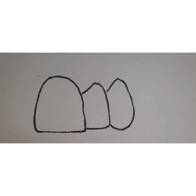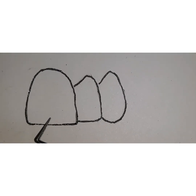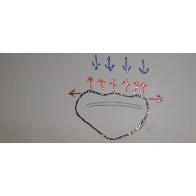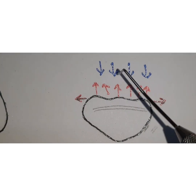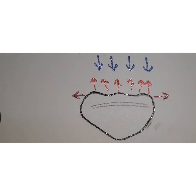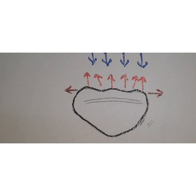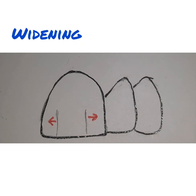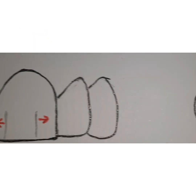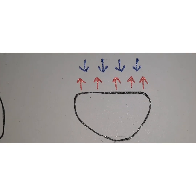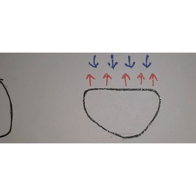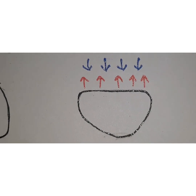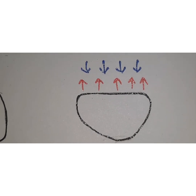To create an illusion of widening for a central incisor restoration, we displace the line angles laterally and flatten the facial outline. You highlight the texture and gloss with horizontal lines and ridges, and also reduce the facial embrasure. This makes the tooth appear more widened than it actually is.